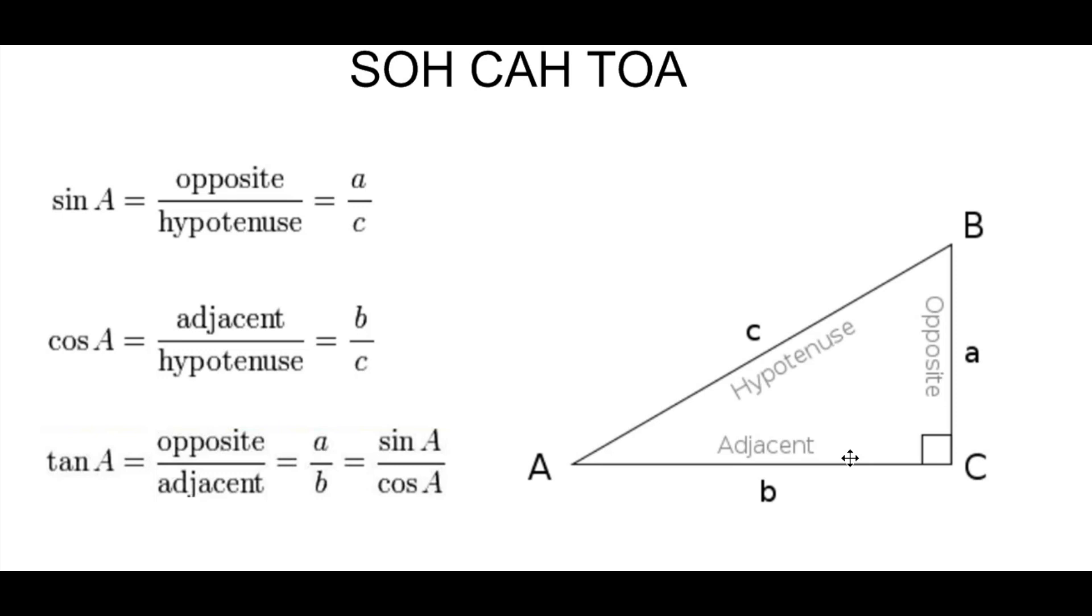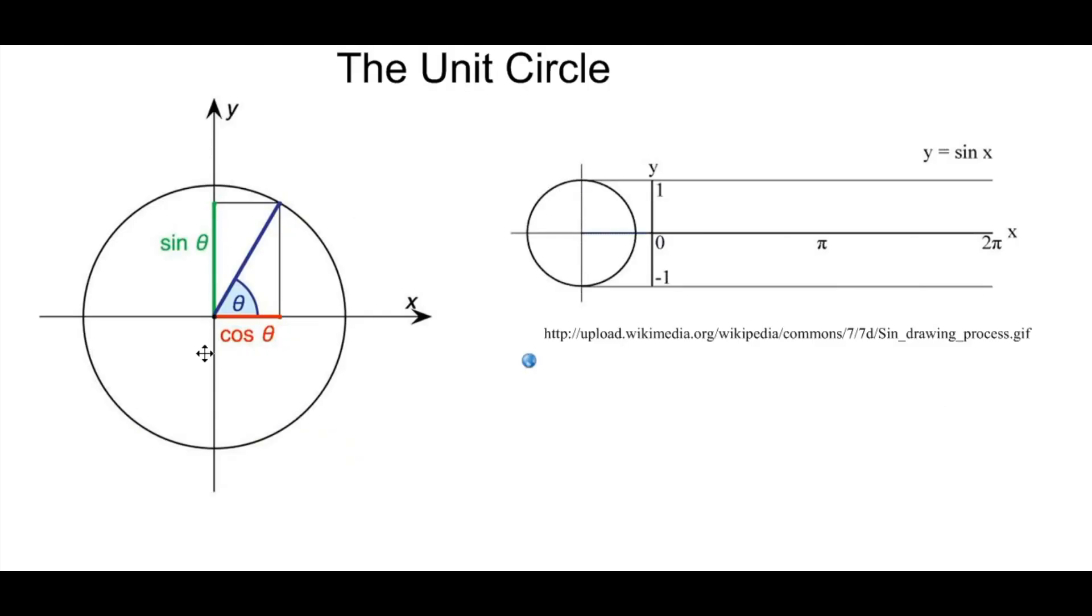The trig identities are just ratios of a right triangle. Now, if you were to create a unit circle whose length was 1 here, cosine of theta would be defined as the horizontal axis, the horizontal length of every single length of the triangle.